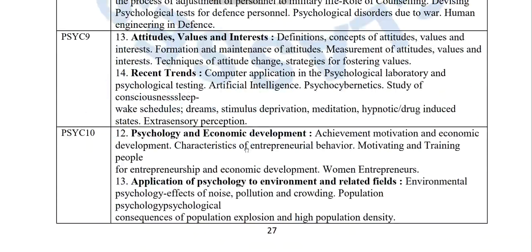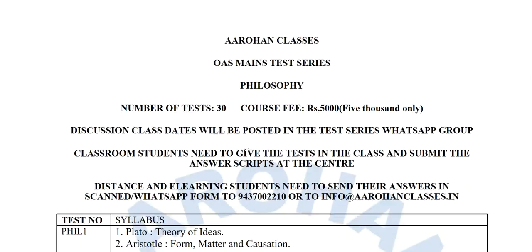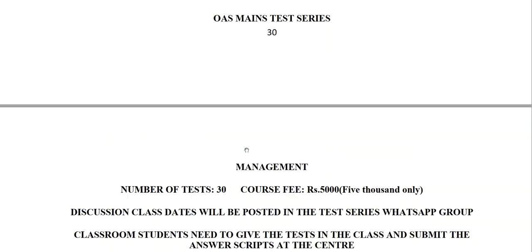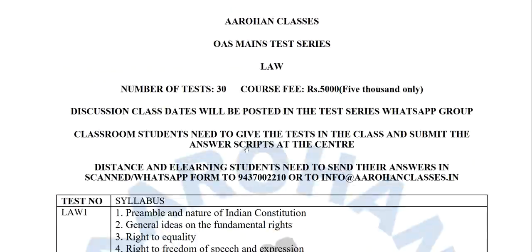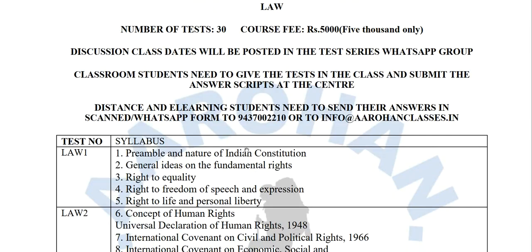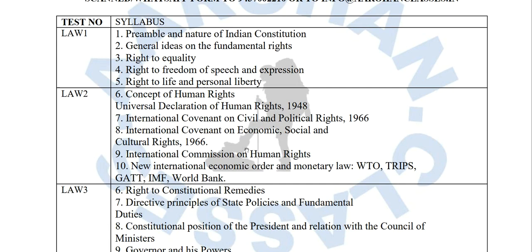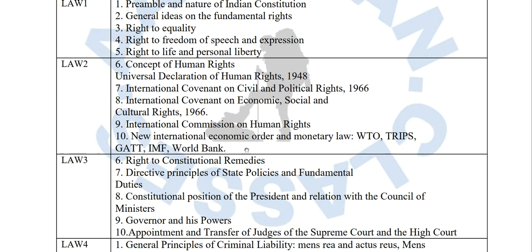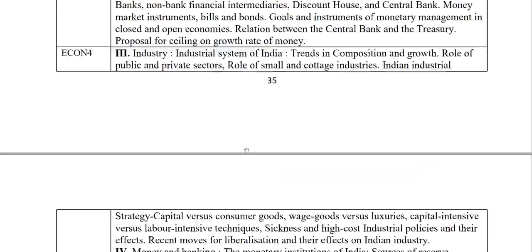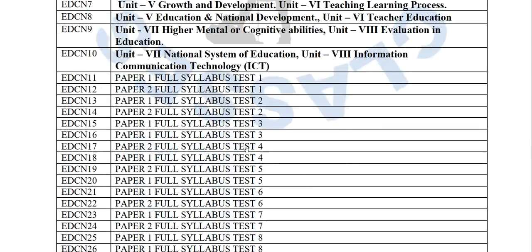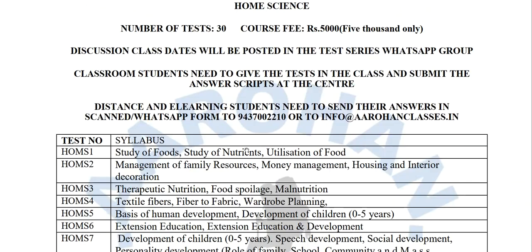There are two types of candidates: those who have already prepared thoroughly and want rank improvement — they can give one test every day — and those who are still preparing and need more time. We are not imposing a strict rigid date; we are giving a two-month time frame within which you have to complete. Whenever you send your copy for evaluation, it will be evaluated. Best wishes for your preparation for the mains exam. For any doubts, you can always WhatsApp at 943-700-2210.